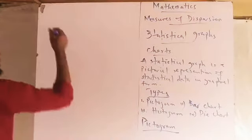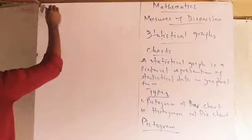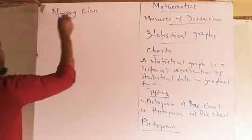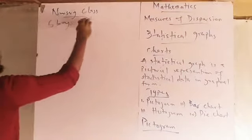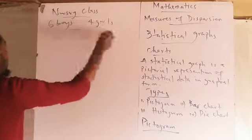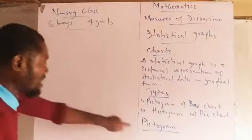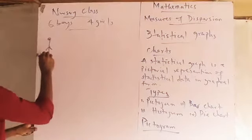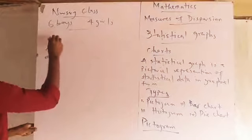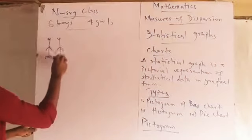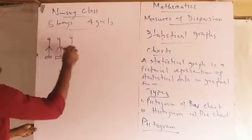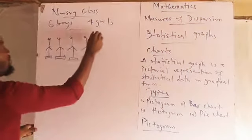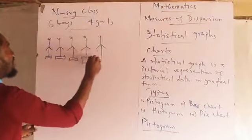Let me give an example. Consider a nursery class where we have six boys and four girls. If I want to present this using the pictogram, I'll be using pictures. So I can use this diagram for the boys — we have six boys in the class.